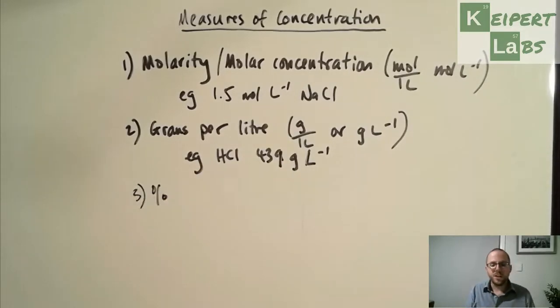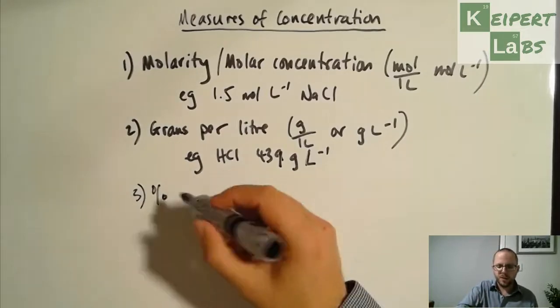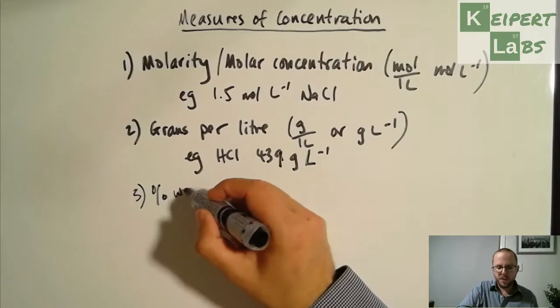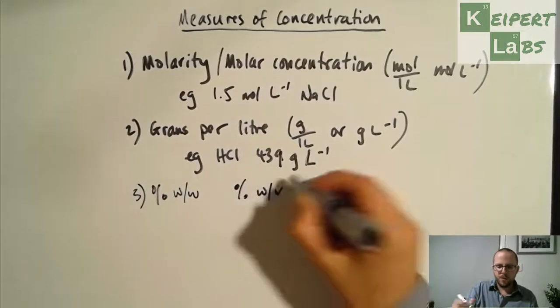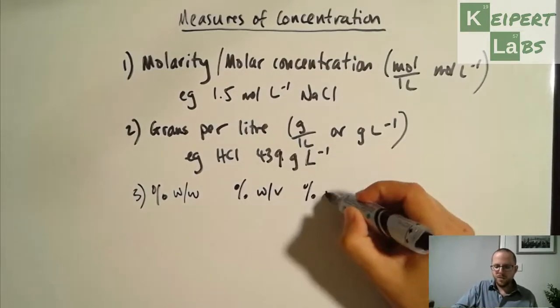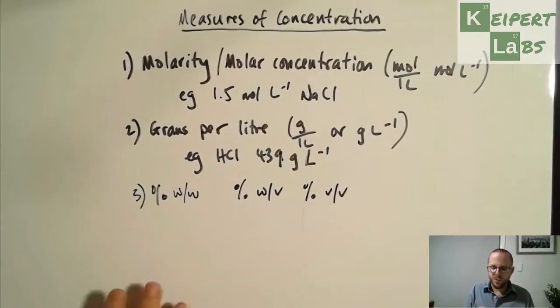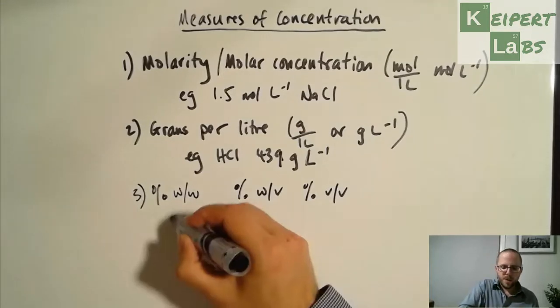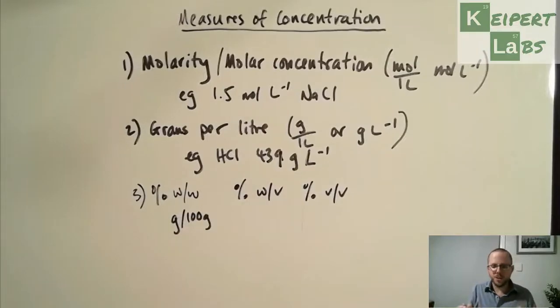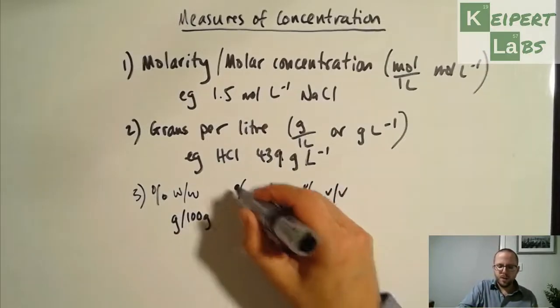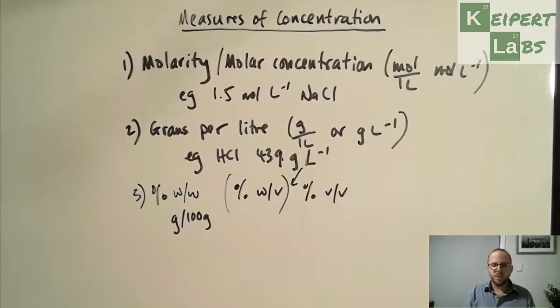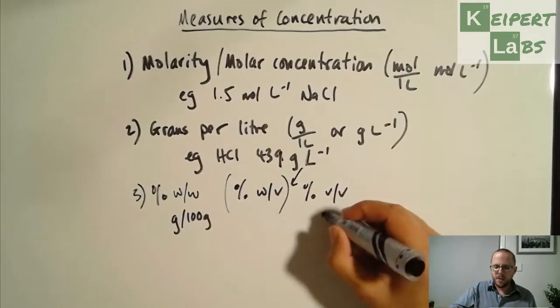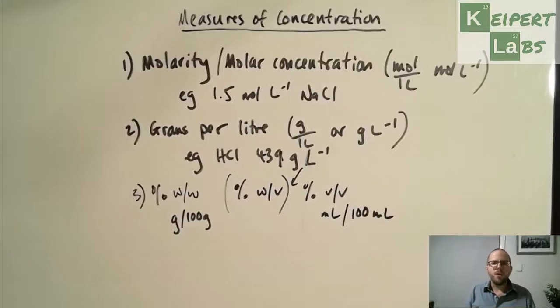And so then we have percentage different ways of expressing it. So we can have percentage weight for weight, or percentage weight per volume, or percentage volume for volume. So the W and the V, weight and volume respectively. So what we're then saying is how many grams per 100 grams of mixture. And then this one here is how many mils per 100 mils of solution.